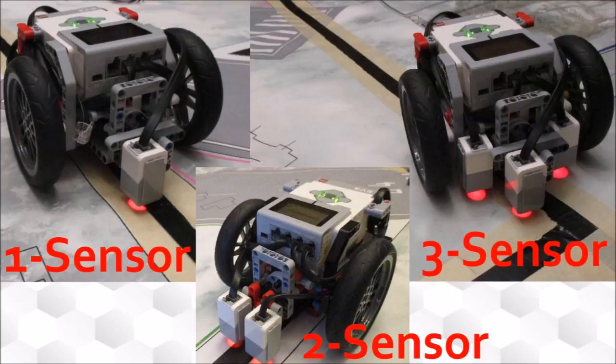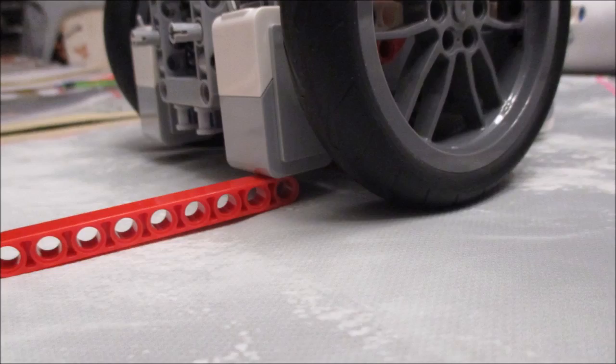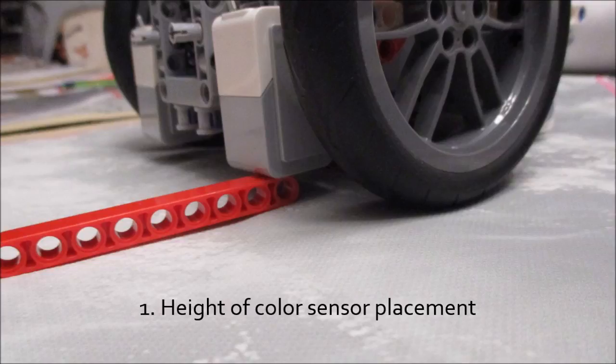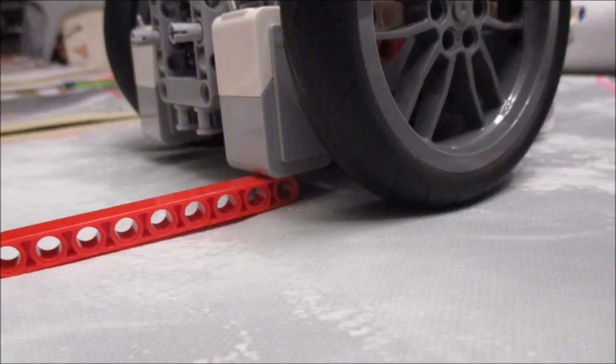The first of these universal principles is the height of the color sensor off the floor. No matter what type of line follower you use, your color sensors should be about one stud or a stud and a half off the mat. This translates to about 8 to 12 millimeters.